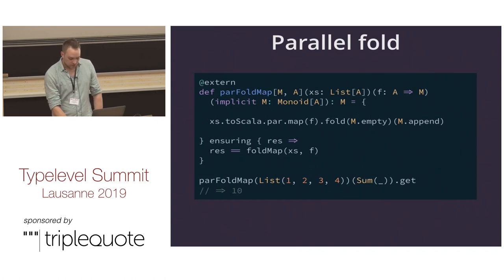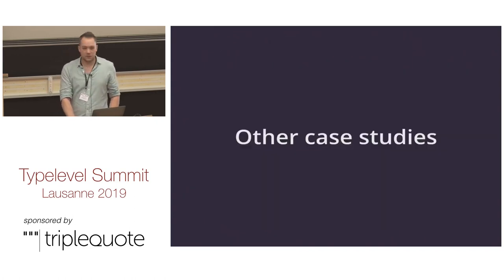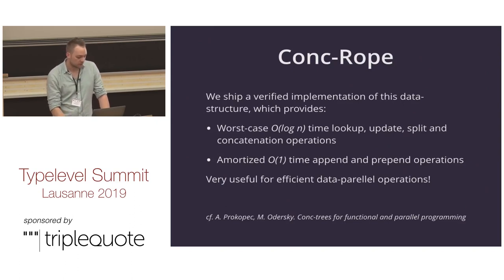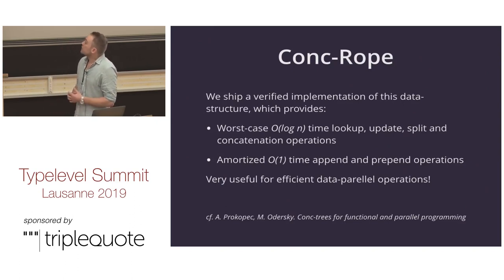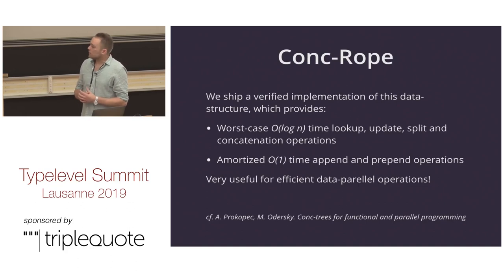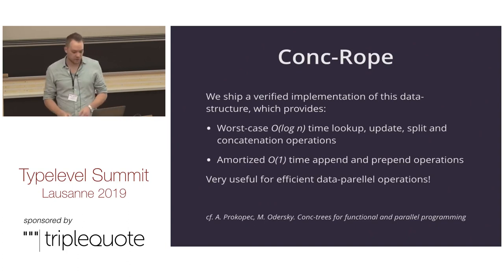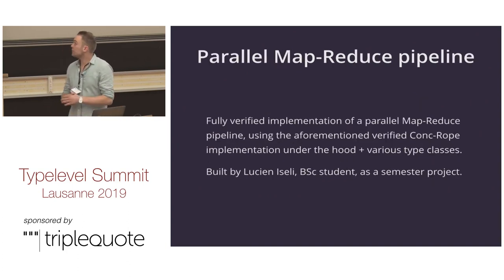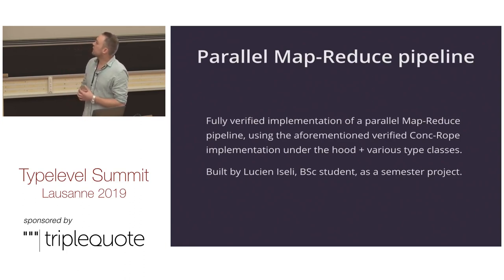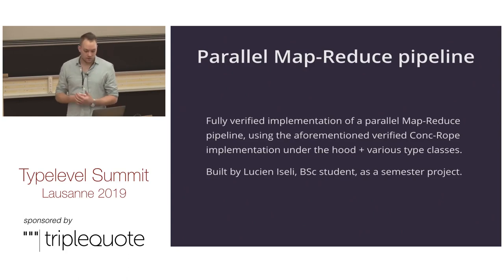Stainless doesn't only do type class law verification. For example, we verified a Concrope implementation — a data structure used for data-parallel operations, like a list but with good performance for lookup, updates, and especially append and prepend. Using this, a student implemented a fully parallel and verified MapReduce pipeline that uses the monoid, uses Concropes, and gives you a fully verified parallel pipeline.